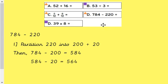Okay, the next one we're going to look at is 784 take away 220. One quick way of doing this would be to partition the 220 into 200 plus 20. And then I would have 784 take away the 200, would be 584. And then I would take off 20, which would be 564. Quickest way of doing it.